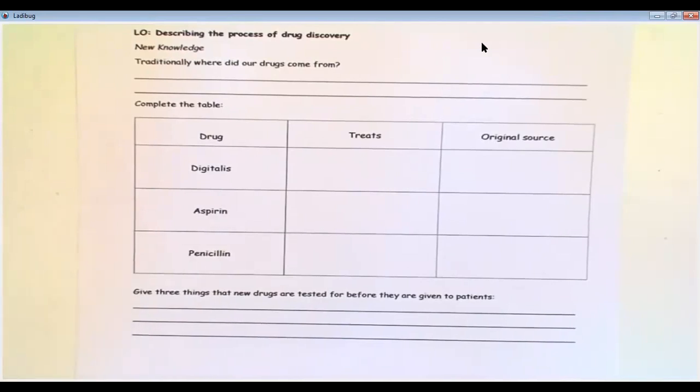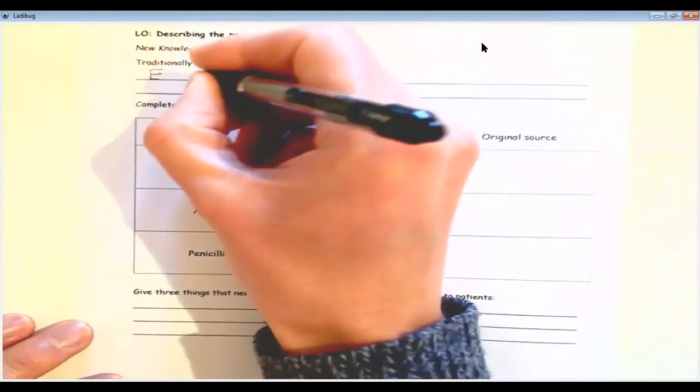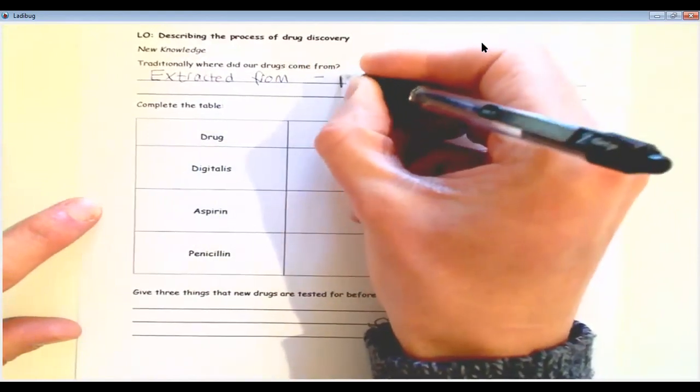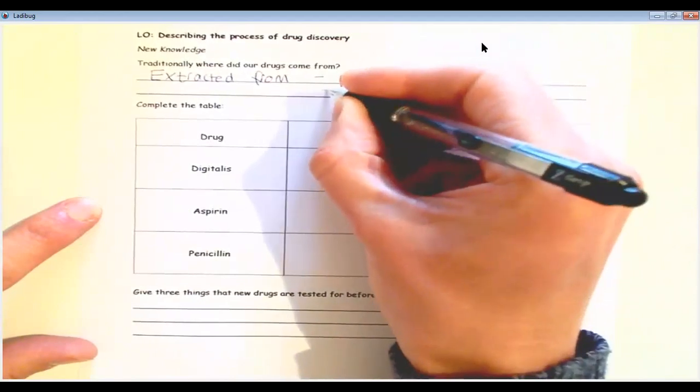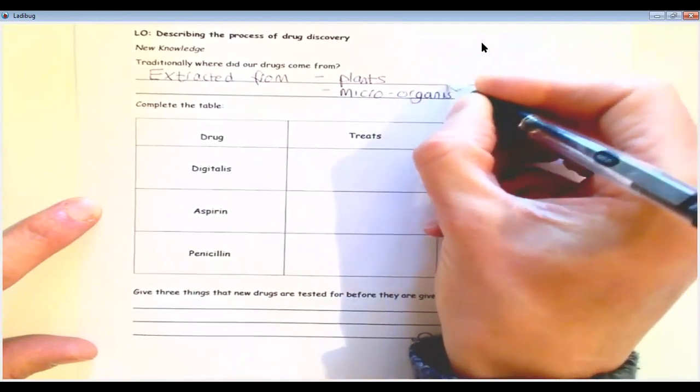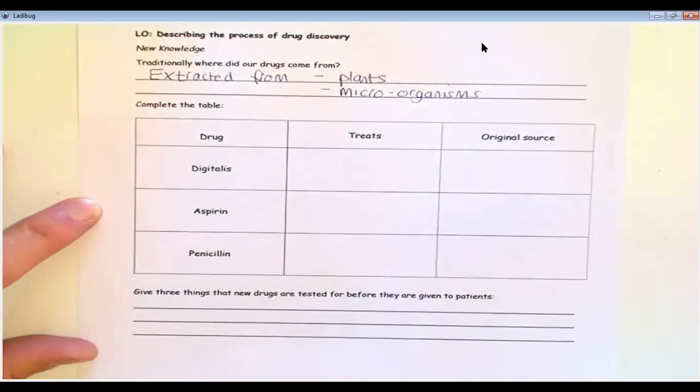Okay, so here we have our questions for today. You can see the first question says, traditionally, where did our drugs—in drugs they mean medicines—where do our medicines or drugs come from? Now traditionally, originally, they were extracted from plants and also microorganisms. Now, the word extracted means purified, extracted from plants and microorganisms. So plants and microorganisms have made chemicals naturally, and that's really so they can fight off their own infections. What we've done is found ways to remove them from plants and microorganisms and use them for ourselves.